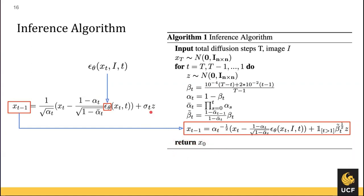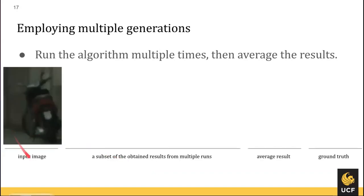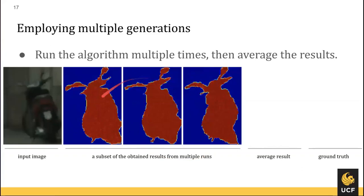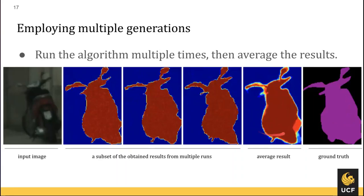An important aspect: when computing X_{T-1}, we add sigma_T times Z, where Z comes from a standard distribution. This causes the network to give different outputs every time we run inference. We take advantage of this by running the algorithm multiple times — 30 times in their experiments — and then averaging the results. A subset of obtained results from each run is shown, and when averaged, the output is more consistent and shows an increase in performance.